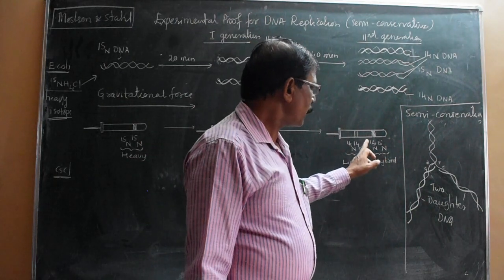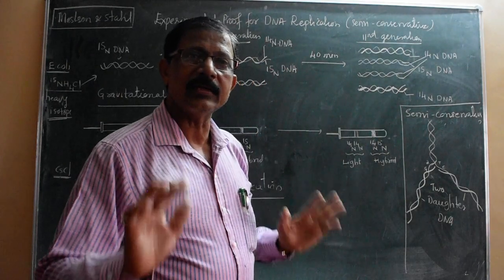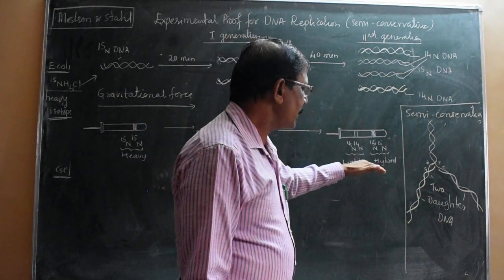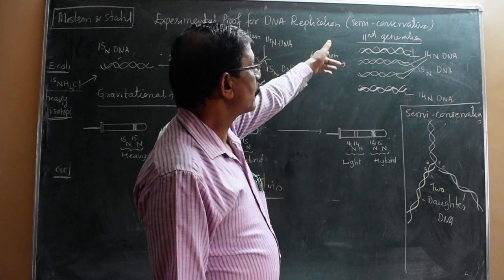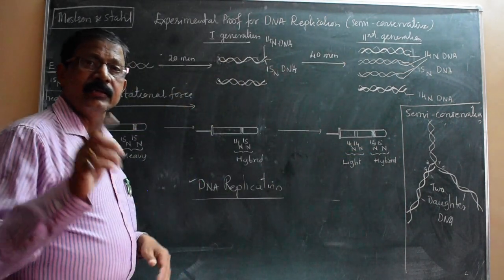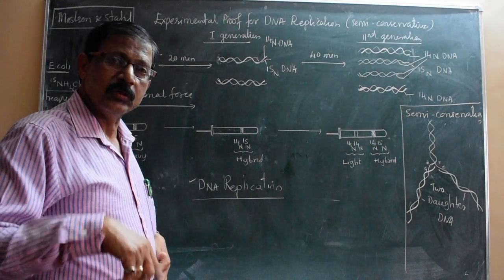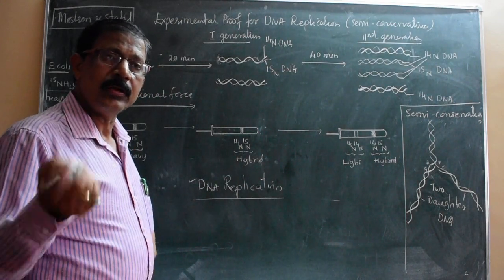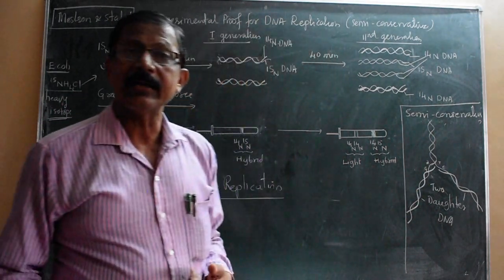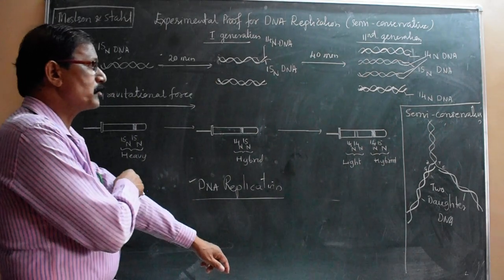So 14N and 15N are both present - means the hybrid is also there and one is light DNA. Both the light DNA and the hybrid DNA appear after the second generation. The DNA strand formed: one is old, another one is new. Old, new, old, new - like this the daughter DNAs are formed. This process is called the semi-conservative process.